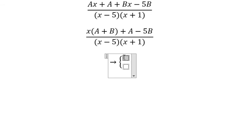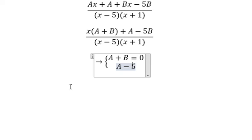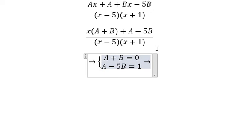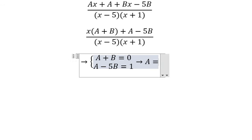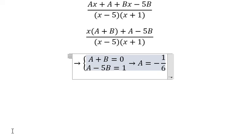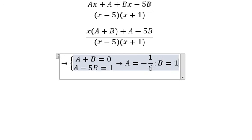So we get A plus B equals 0, A minus 5B equals 1. So we get the solution of A and B: A equals negative 1 over 6, B equals 1 over 6.